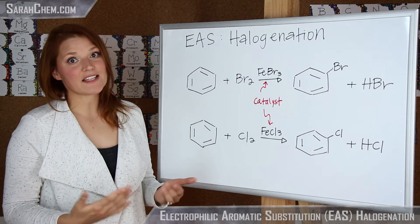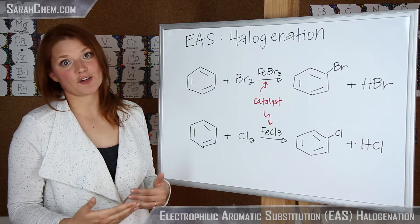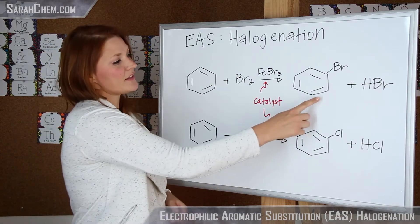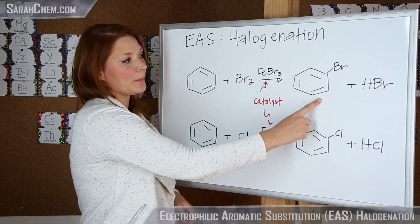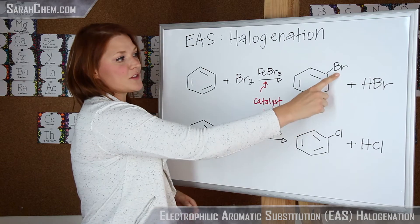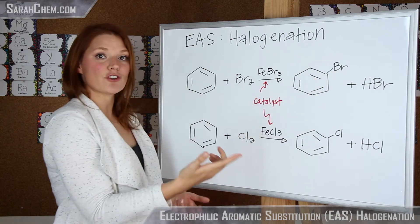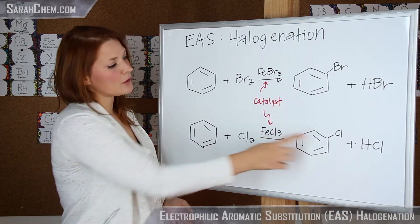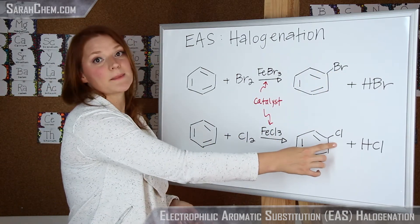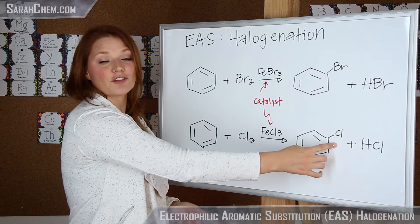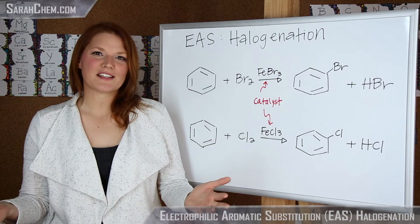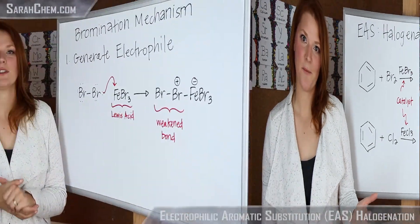When the reaction does happen after the generation of that electrophile, you'll see that in the case of the bromination, we've substituted out a hydrogen for a bromine, and in the case of the chlorination, we've substituted hydrogen for a chlorine. So let's go ahead and take a look at what this mechanism looks like.